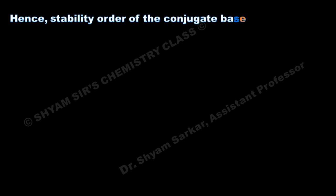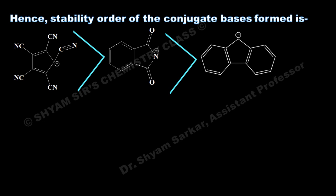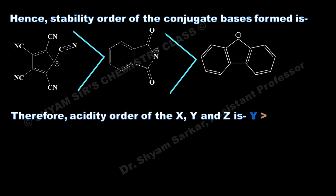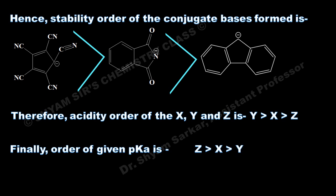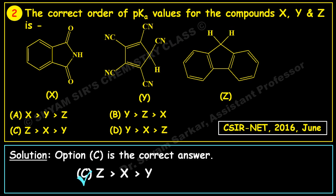Arranging the stability of the conjugate bases, the acidity order of X, Y, Z will be: Y > X > Z. Converting the acidity order into pKa order — the reverse of acidity — gives us: Z > X > Y. Matching this with the options, Z > X > Y corresponds to option C, so option C is the correct answer.